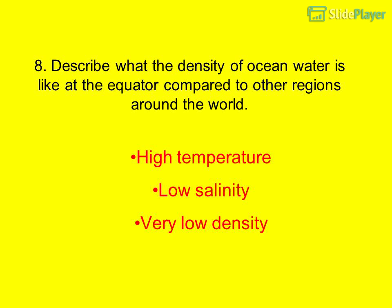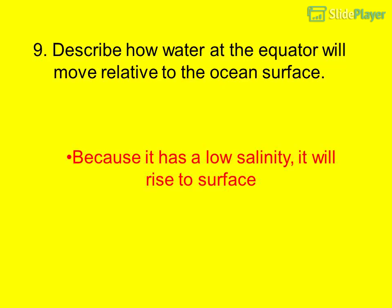Question 8: Describe what the density of ocean water is like at the equator compared to other regions around the world. High temperature and low salinity result in very low density. Because it has low salinity, it will rise to the surface.